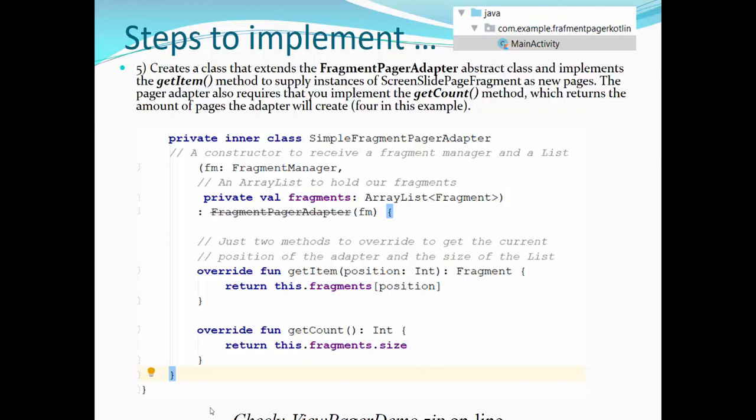What is inside fragment page adapter? This is a class that extends fragment page adapter and implements getItem and getCount method to supply instance of the screen slide page fragment as new pages. The page adapter also requires that we implement getCount, which returns the amount of pages the adapter will create. In this case, it will be getCount return four in this example. And getItem will always supply instance of the fragment object. Please check view pager demo zip online, how this project is implemented.